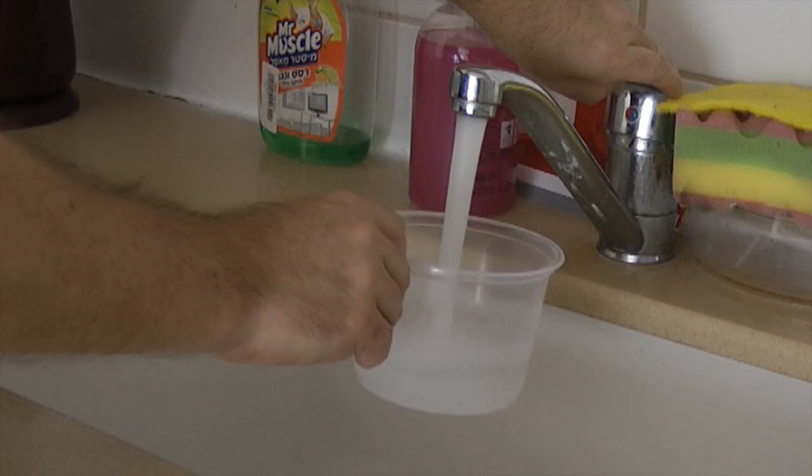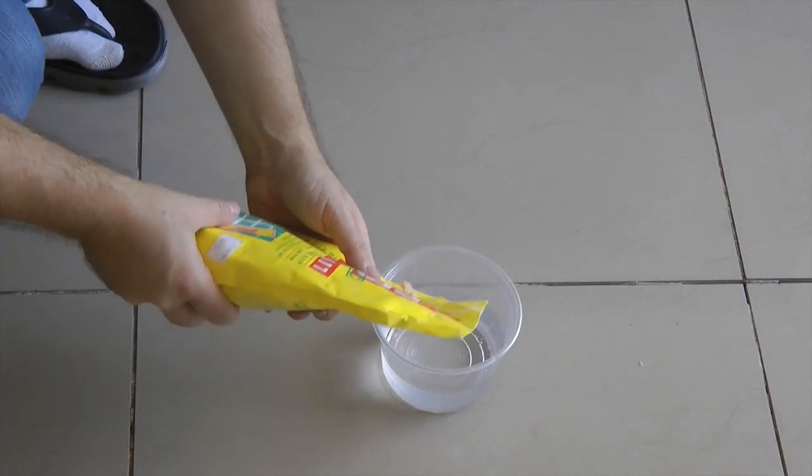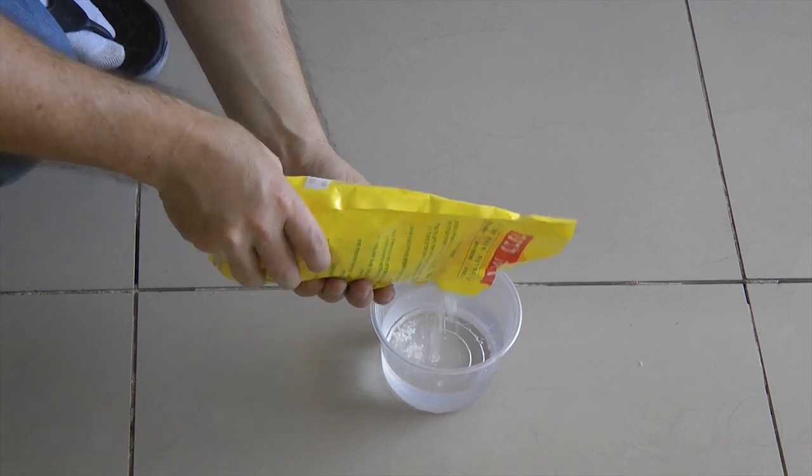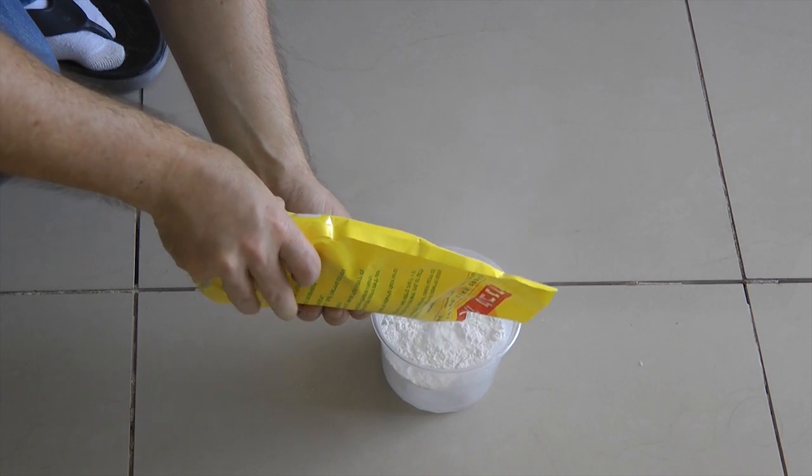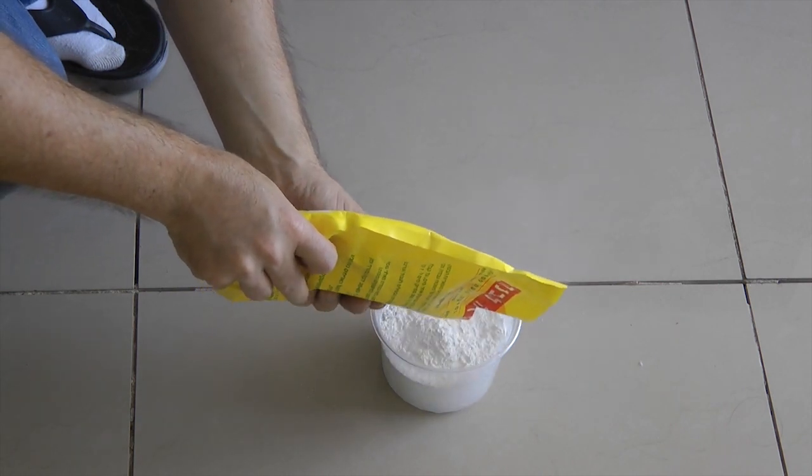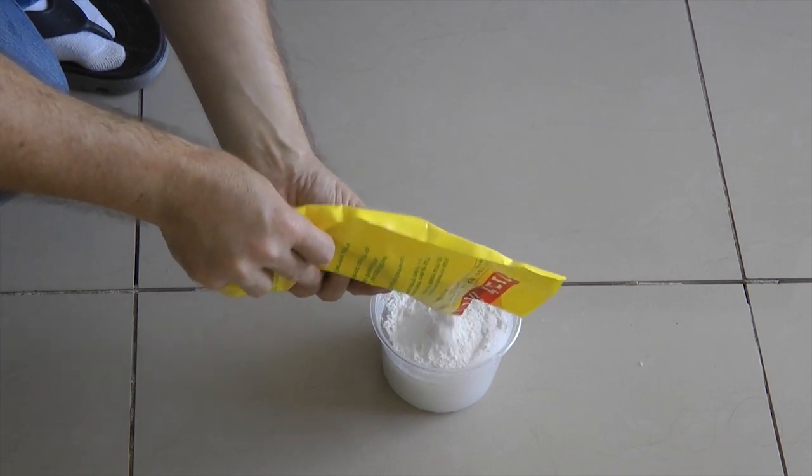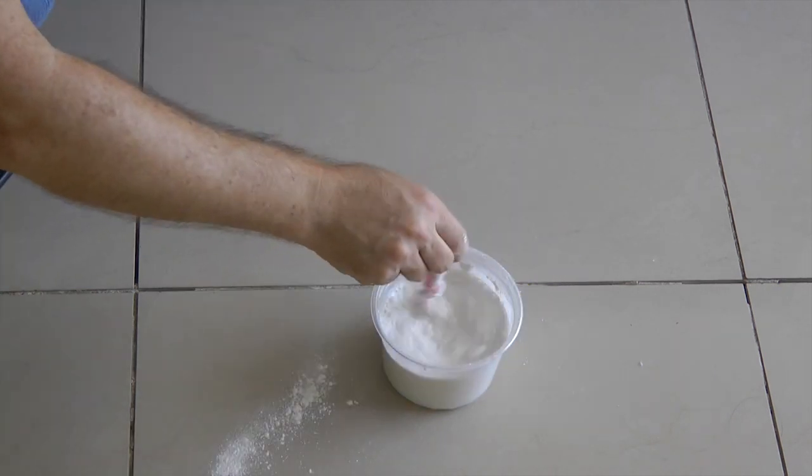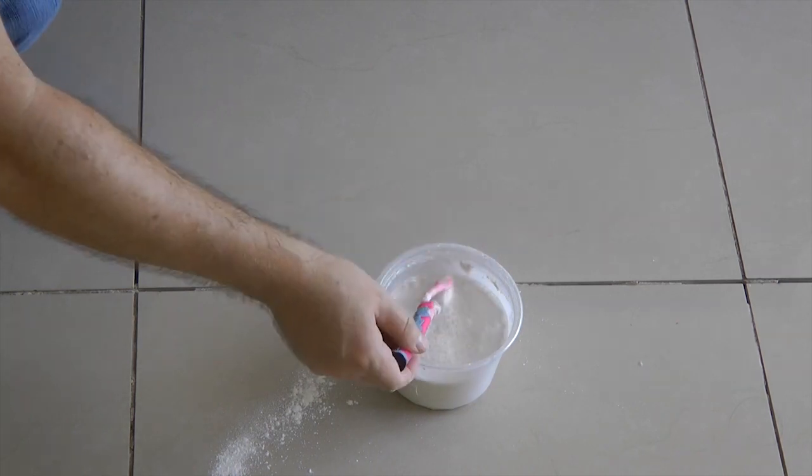So we pour the water and make a mixture of water and tile glue, or you can even take a filler. The mixture that should be prepared must be creamy, not very liquid and not very viscous. So we need to stir and see what happens. It will take a little time.